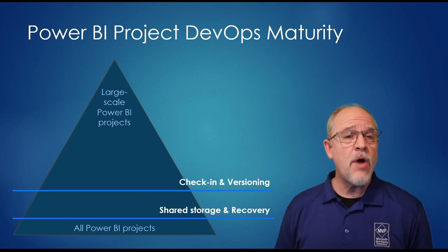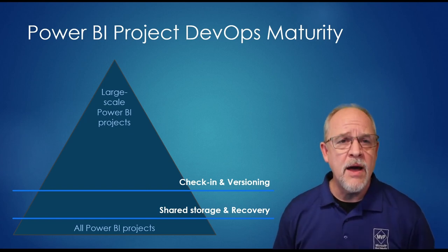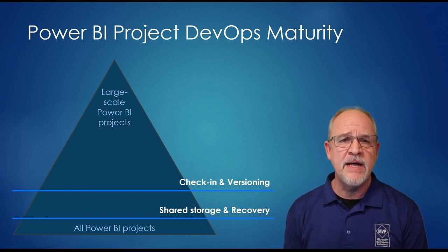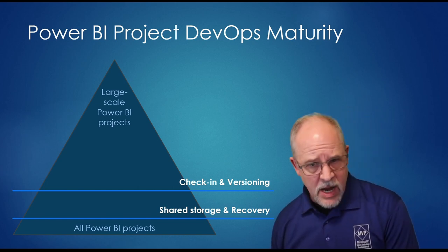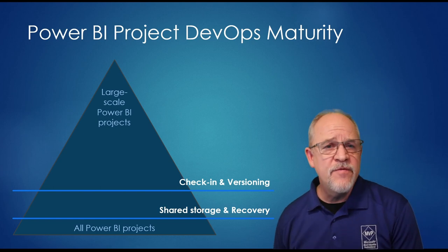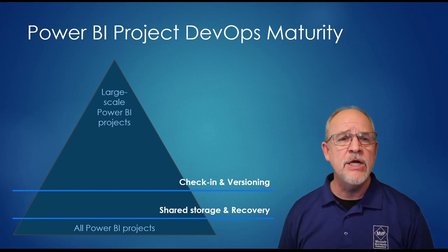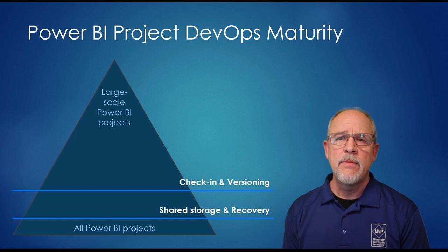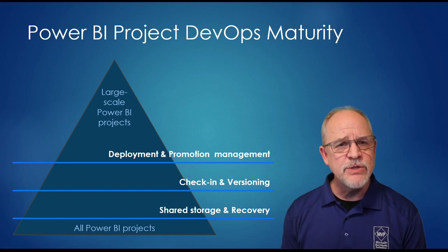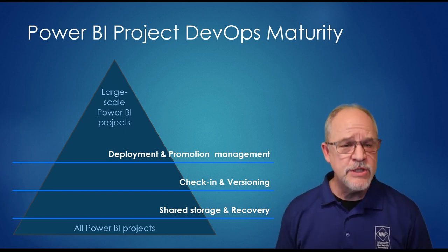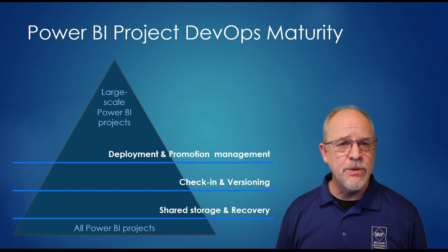Secondly, if you're doing that, you probably have check-in and versioning capabilities. The second rung up the maturity curve is the ability to version your files so that you can revert back to an earlier version, or roll forward so another developer can pick up the work knowing what version they're on. You have a disaster recovery plan because you're using shared storage that's not just in somebody's personal space. Moving up to the next stage: deployment, promotion, and management. This could be as simple as deploying to a designated workspace, or using features of Power BI Premium to manage deployment pipelines.